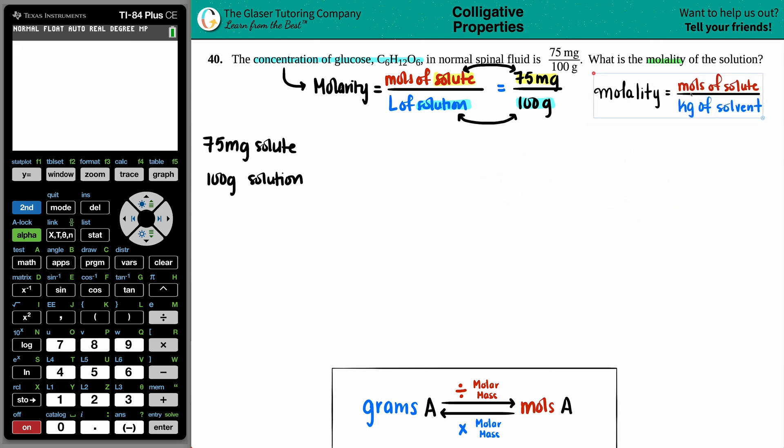They're very similar formulas, molarity and molality, but the denominators are different. The numerators are both the same. Both are moles of solute divided by molarity is liters of solution, but molality is kilograms of solvent.